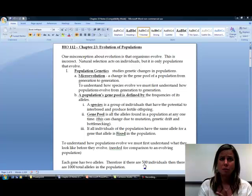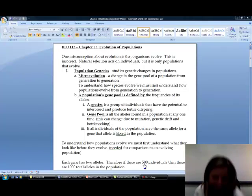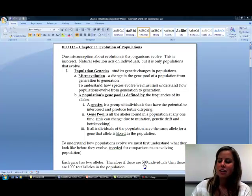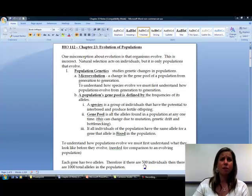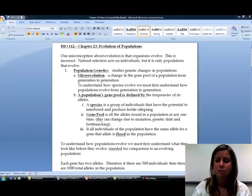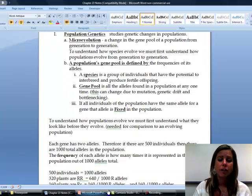So now what we're going to do is try and calculate how many dominant alleles are in a population and how many recessive alleles are in a population. So if we have 500 total, we said that's going to be 1,000. Let's say that we have 320 that are big R, big R. So how many big R alleles are in that little population? Well, if we have 320 of one of the big R's and 320 of the other, that means we're going to have a total of 640 big R's in that little section of the population.